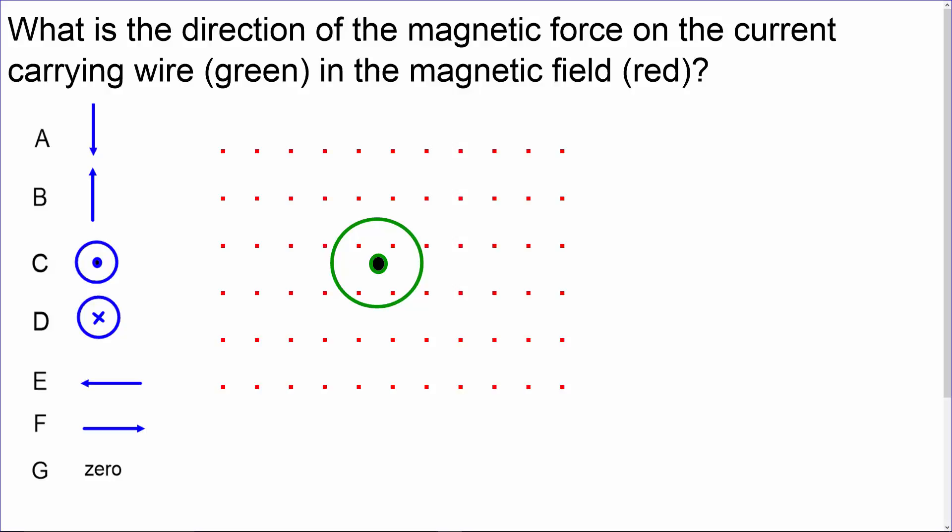When we have both the field lines and the conventional current pointing parallel to one another, there can be no magnetic force. So the answer here is g, zero.